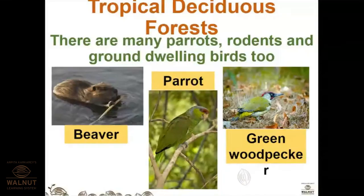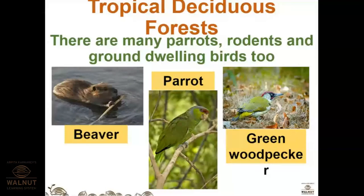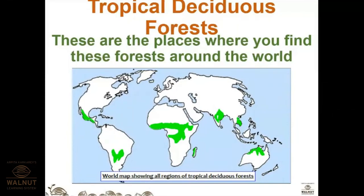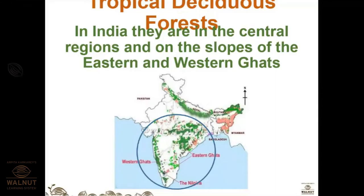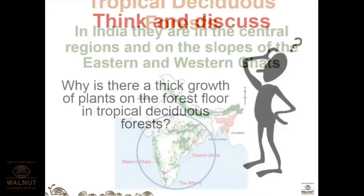Dwelling refers to the process of digging. On the world map, the areas highlighted in neon green show where deciduous forests are found — especially in the central regions of India and on the slopes of the Eastern and Western Ghats.